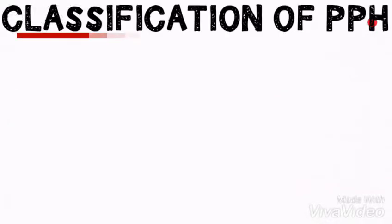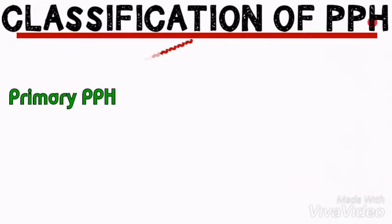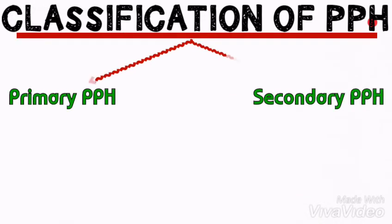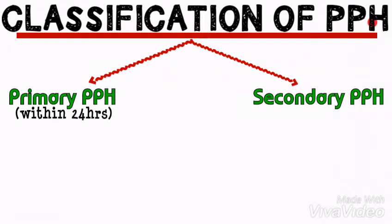We are now looking at the classification of postpartum hemorrhage. Under the classification of postpartum hemorrhage, we have primary postpartum hemorrhage and secondary postpartum hemorrhage. Primary postpartum hemorrhage is the blood loss estimated to be greater than 500 mls from the genital tract within 24 hours of delivery.